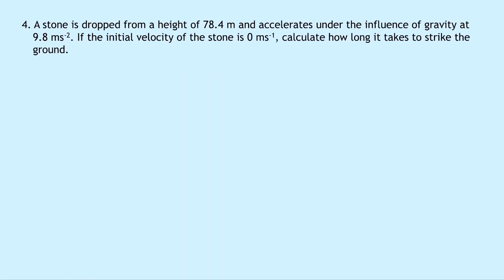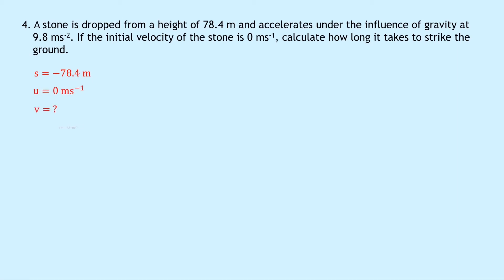Question four says that a stone is dropped from a height of 78.4 meters and accelerates under the influence of gravity at 9.8 meters per second squared. If the initial velocity of the stone is 0 meters per second, calculate how long it takes to strike the ground. Doing SUVAT on the left hand side: S equals minus 78.4 meters. The reason I've used minus is because we're going to choose downwards to be negative in this question — upwards is positive and downwards is negative. So my displacement downwards is minus 78.4 meters. Initial speed is 0 meters per second, we don't know the final speed, A is minus 9.8 meters per second squared — again negative because it always acts downwards. And we don't know our time.